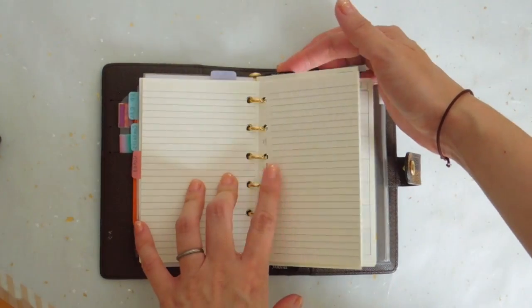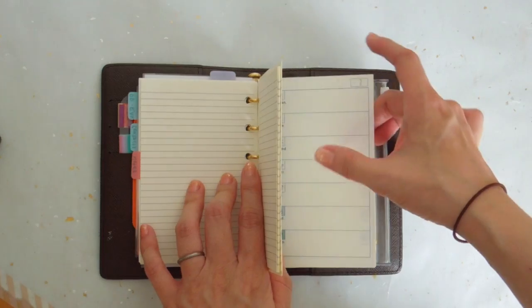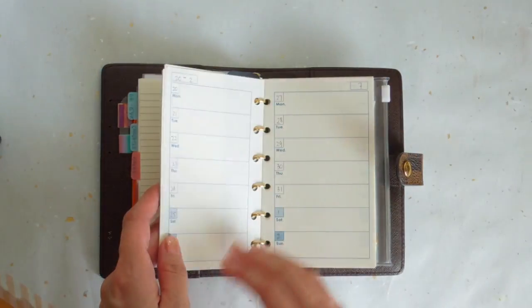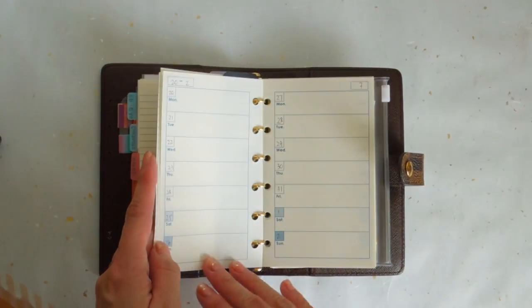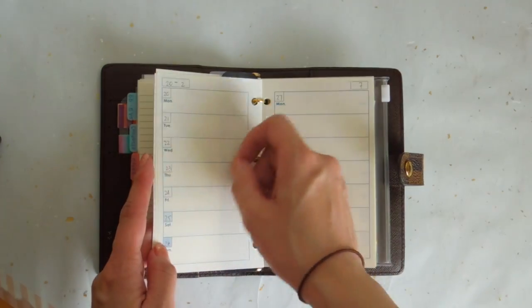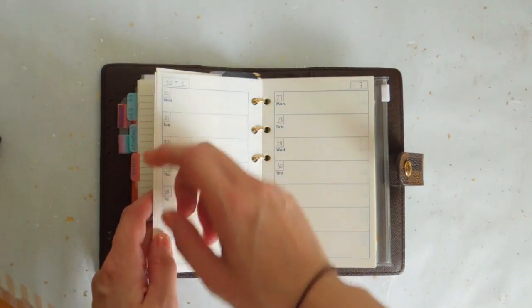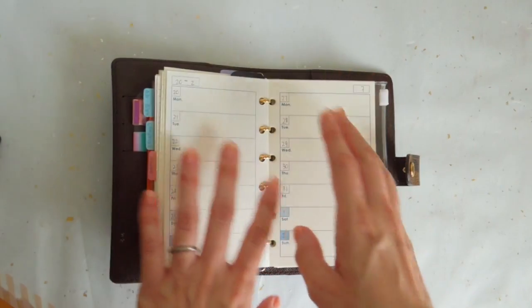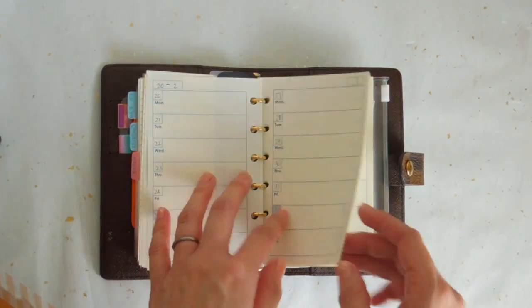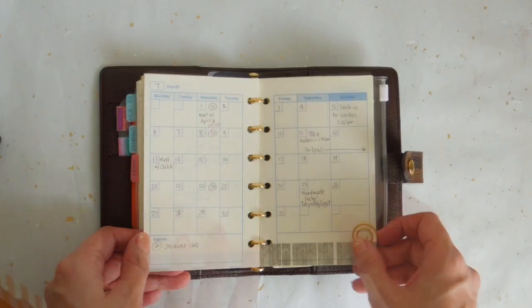So this here is my Filofax page flag, and it goes directly to my week on one page view. I got these from Daiso, which is perfect. That's all I really need. I usually write down the orders that I sent out and just really simple things.